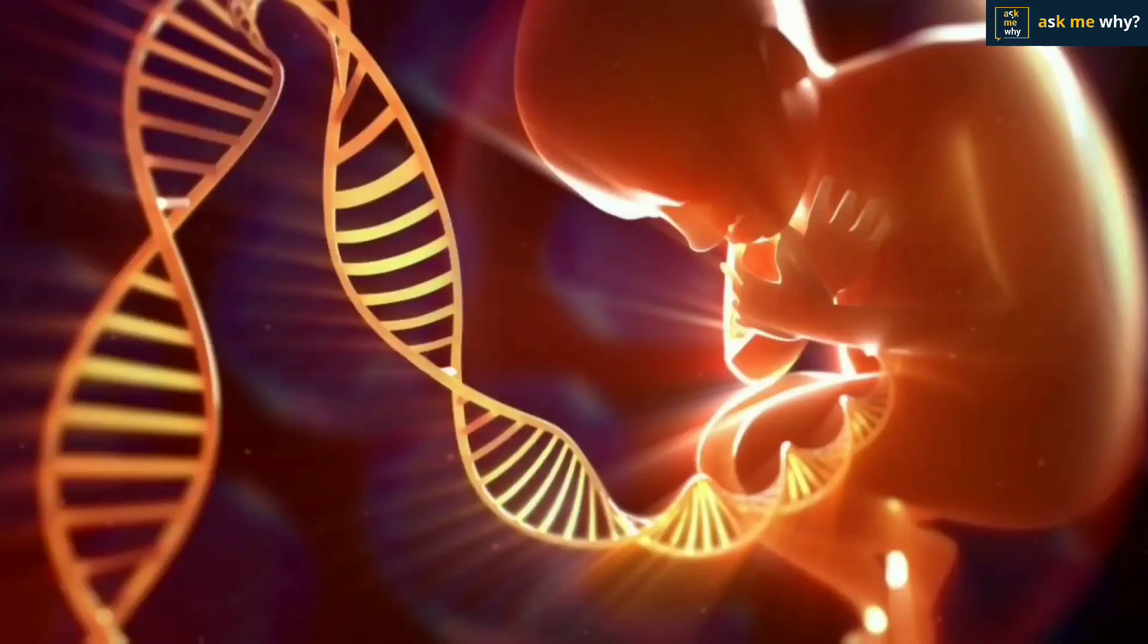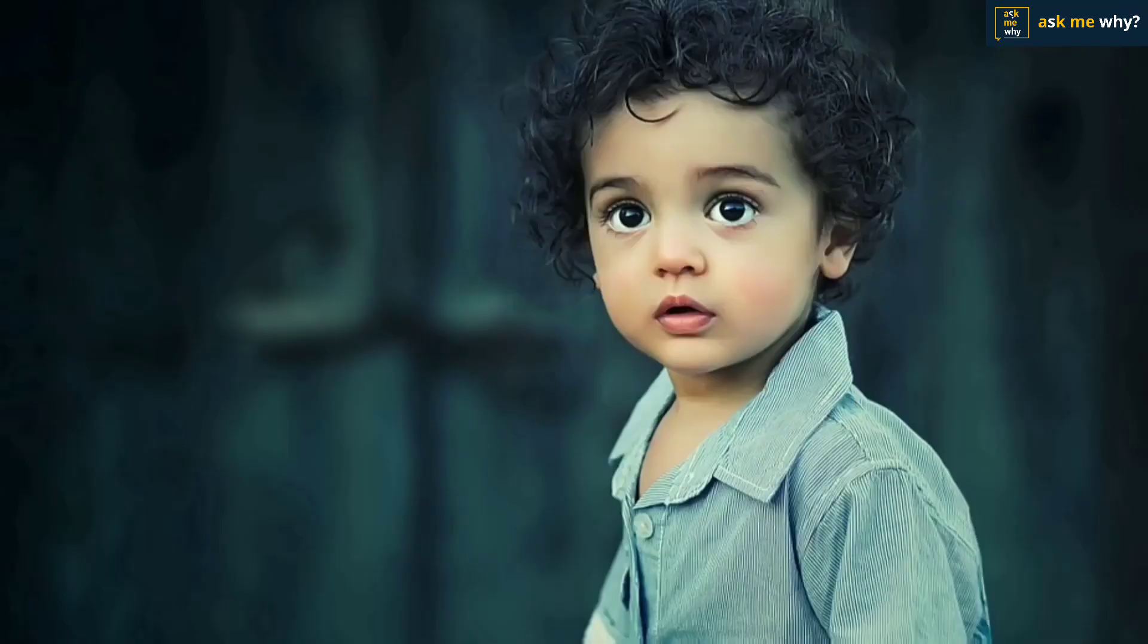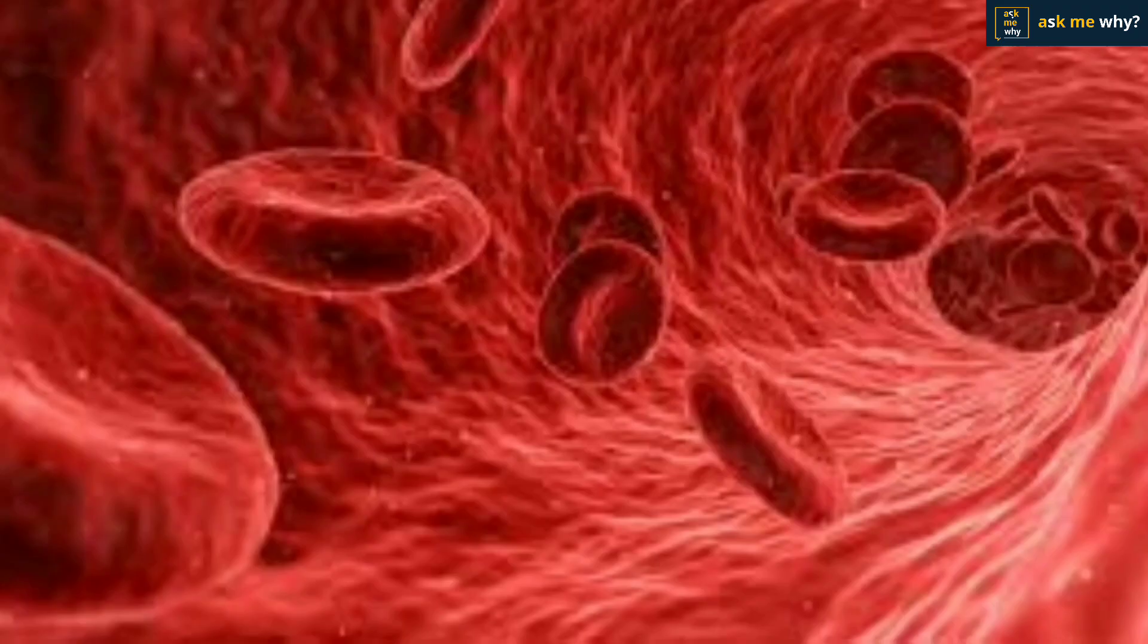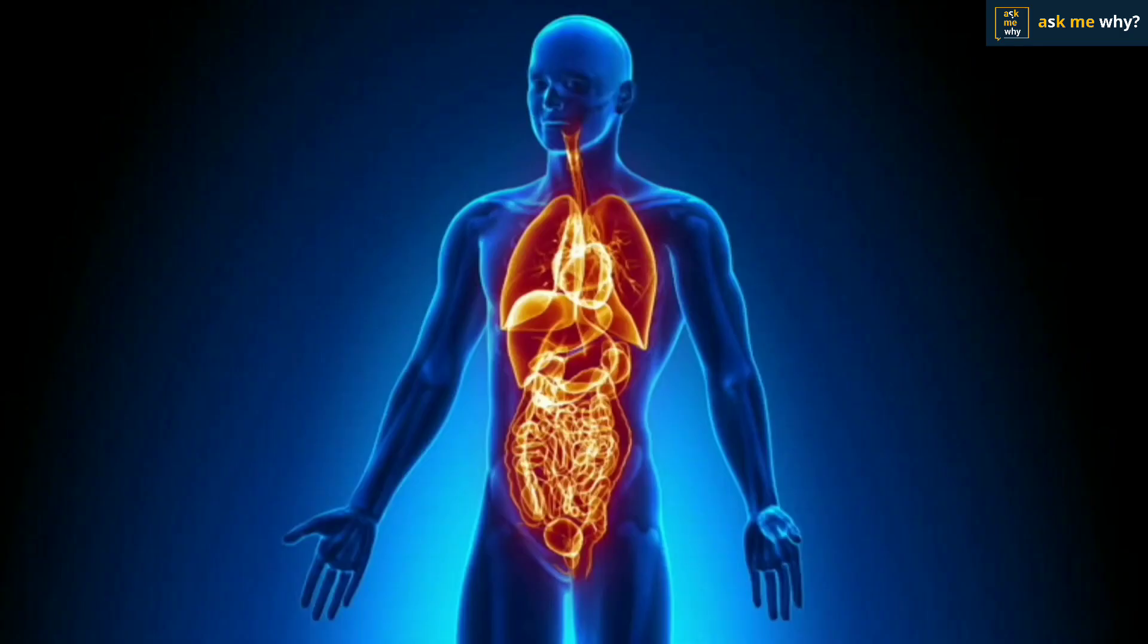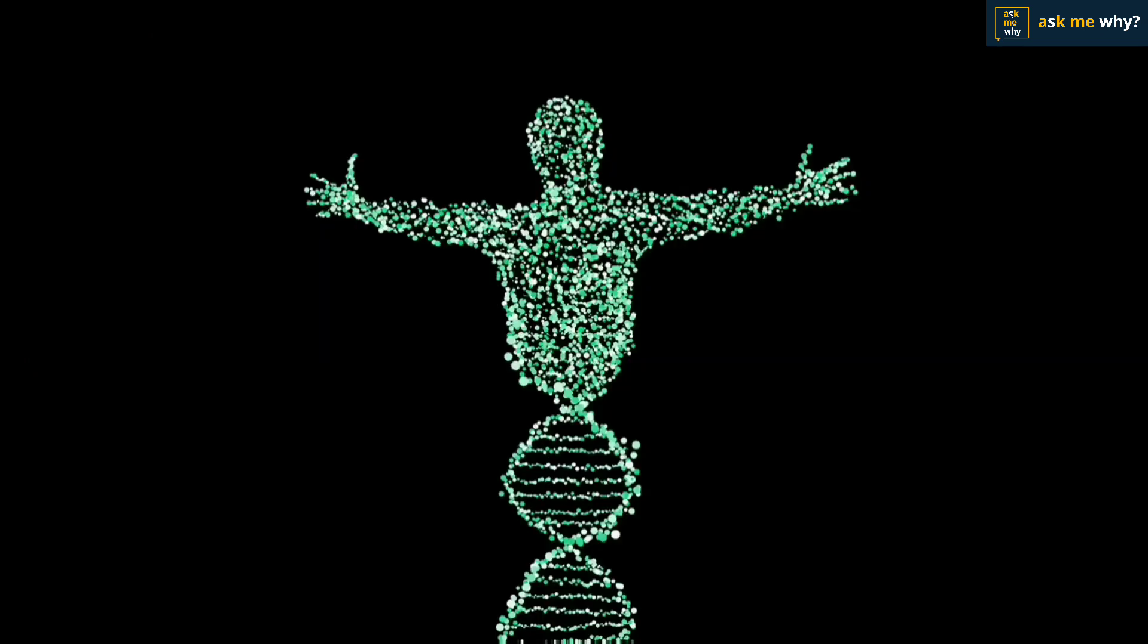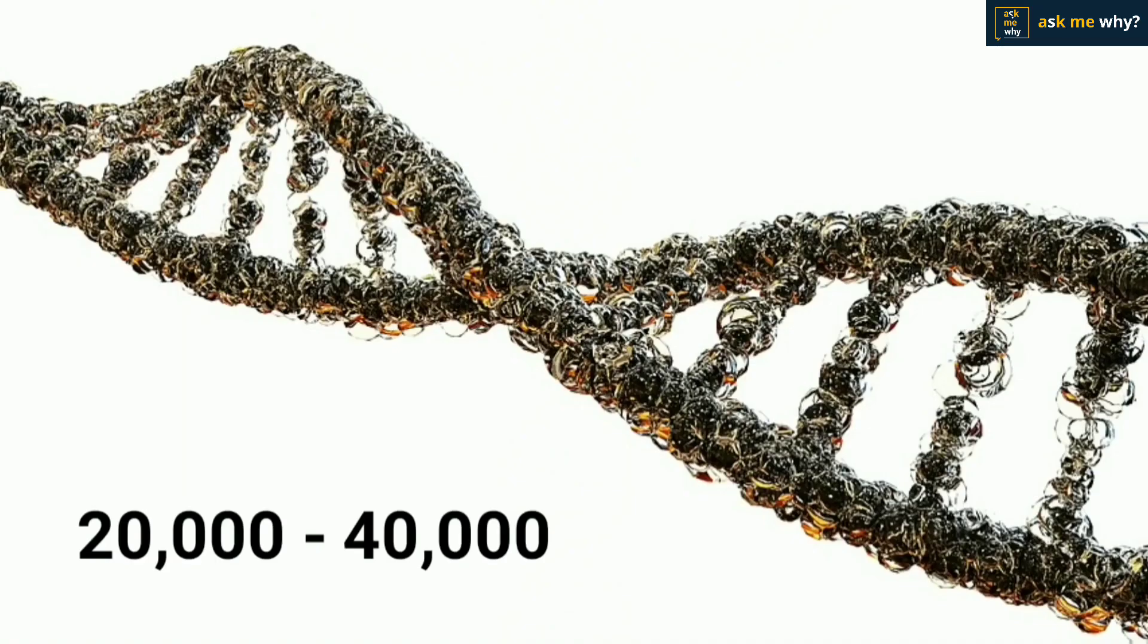All the instructions that tell us how to make our body are in this DNA in the form of genes. To put it in simple words, if this DNA is a library, then these genes are books in it. All our body information, about what color we should be, what blood type we should have, where our head should be placed, how many fingers we should have on our hands, all this information is stored in our DNA in the form of genes. Our DNA contains approximately 20,000 to 40,000 genes.